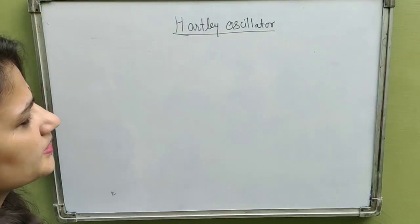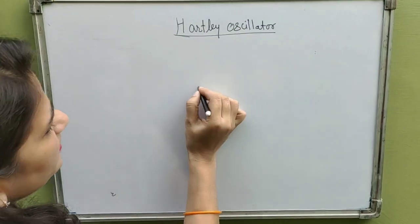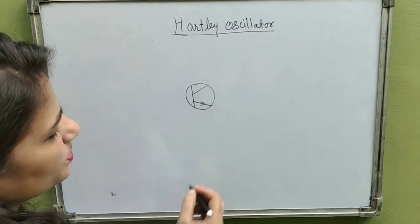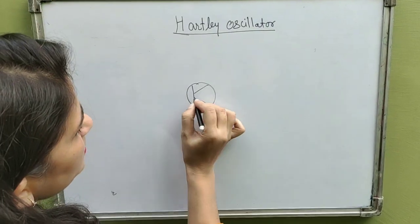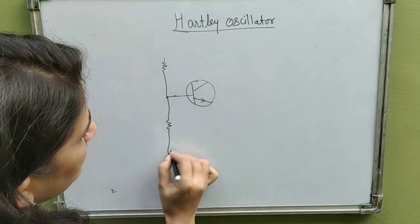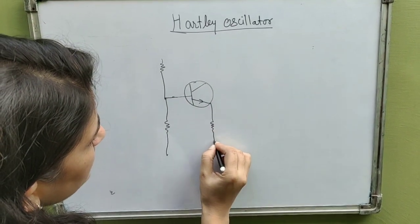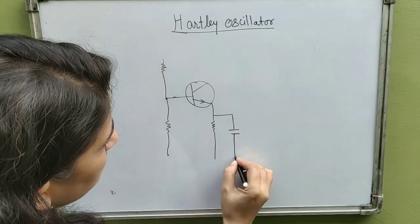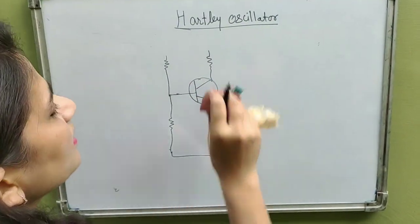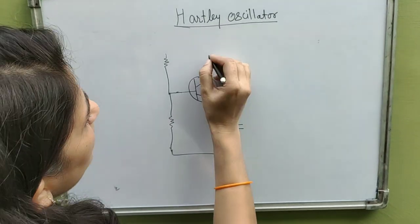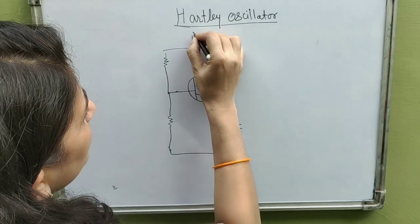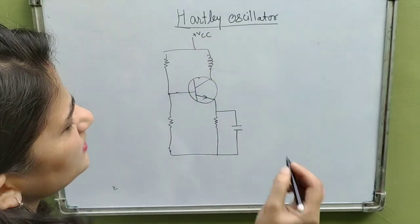What are the parts of this oscillator? First is the transistor amplifier. As I already discussed, an NPN common emitter transistor configuration is used, and it is properly biased with the following resistances and capacitances. One different kind of radio frequency coil is also used in this Hartley oscillator.